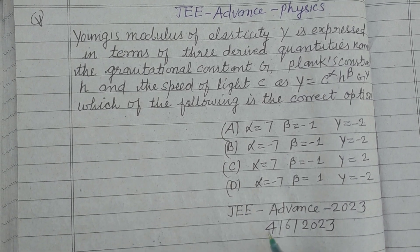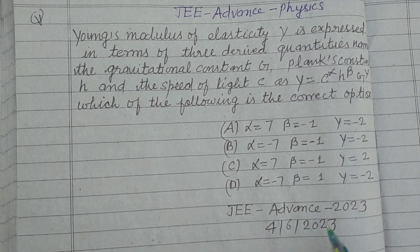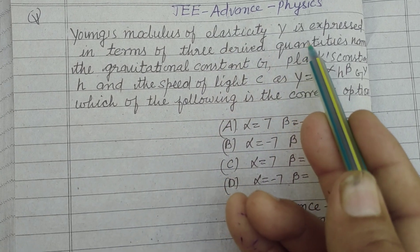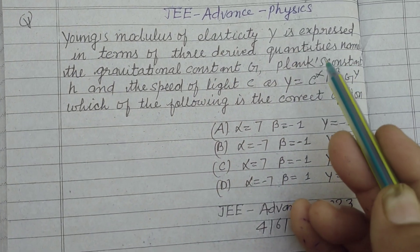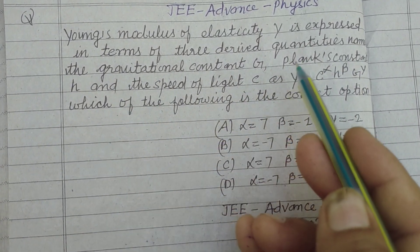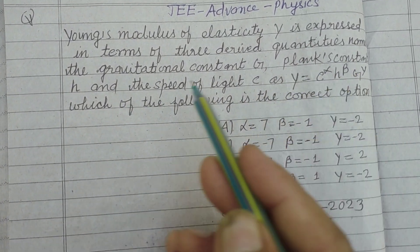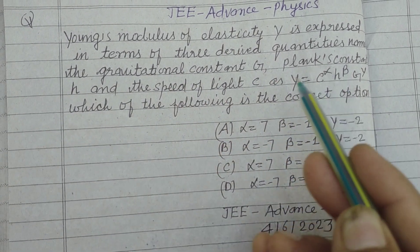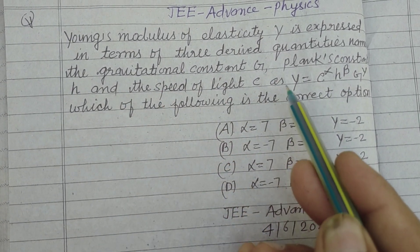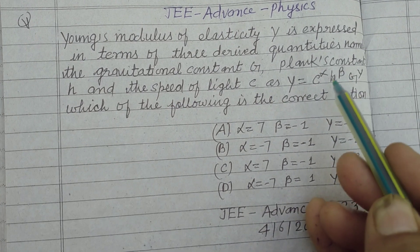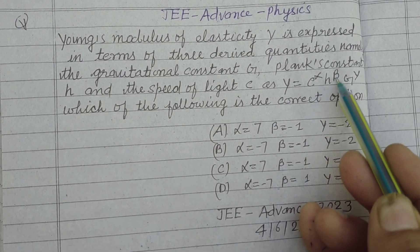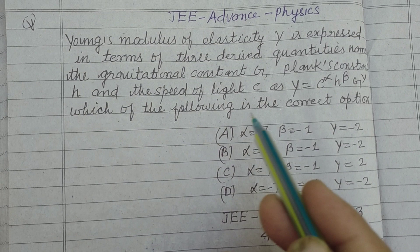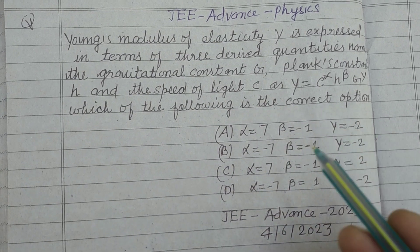Hello students, this is a question from JEE Advanced 2023. Young's modulus Y is expressed in terms of three derived quantities: the gravitational constant G, Planck constant H, and speed of light C as Y equal to C to the power alpha, H to the power beta, G to the power gamma. Which of the following is the correct option?